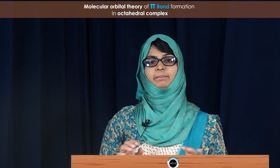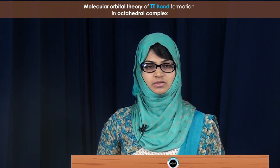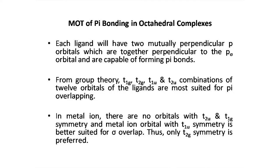We should consider the symmetries required for pi bond formation in octahedral complexes. From group theory, the symmetries suited for pi bond formation are T1g, T2g, T1u, and T2u. The T1g and T2u symmetries are not found in metal orbitals. The T1u symmetry is better suited for sigma bond formation in octahedral complexes. Therefore, we are left with T2g symmetry, which is the symmetry considered for metal orbitals in pi bond formation.